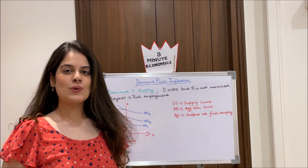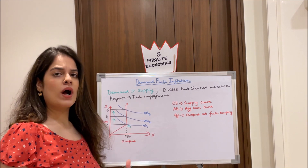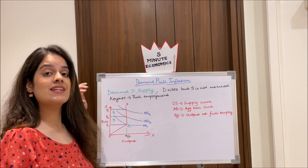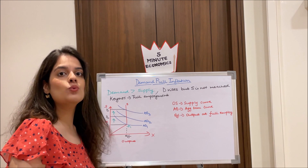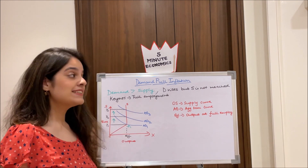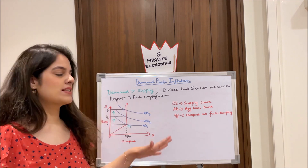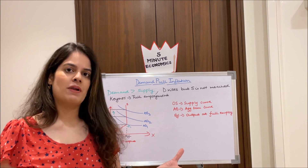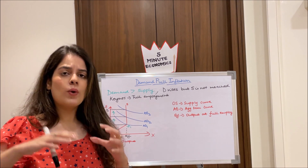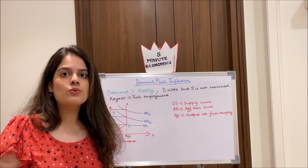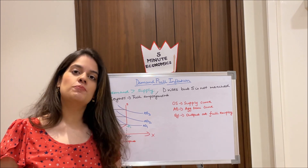Now let's look at demand-pull inflation, or DPI, in detail. DPI is a situation where demand is more than supply — demand is rising but supply is unable to match it, causing prices to rise. This was explained by Keynes, who said it occurs essentially at full employment. For example, once all willing workers are fully employed and there are no more employment opportunities, if demand for a good keeps rising, no one is available to produce more of it — supply can't match demand, and prices are pushed up.